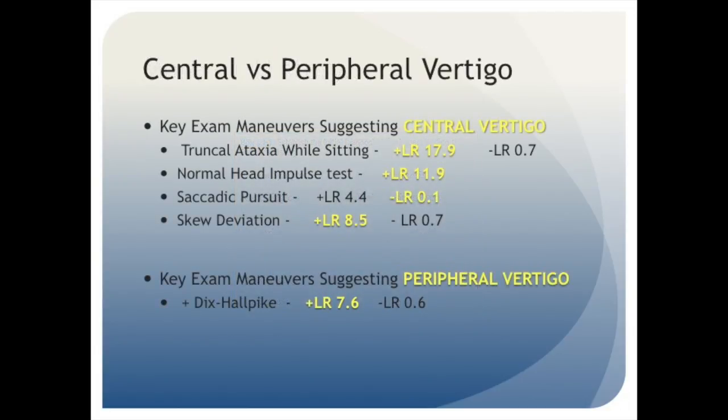Once we've estimated our pretest probability, based on our knowledge of the relative incidence of different etiologies of vertigo in the community combined with aspects of our patient's history, it's time to use evidence-based physical diagnosis maneuvers to help refine the diagnosis. We'll start by discussing key exam maneuvers suggesting a central cause of vertigo, beginning with truncal ataxia at rest, or titubation, which has a positive likelihood ratio of 17.9.